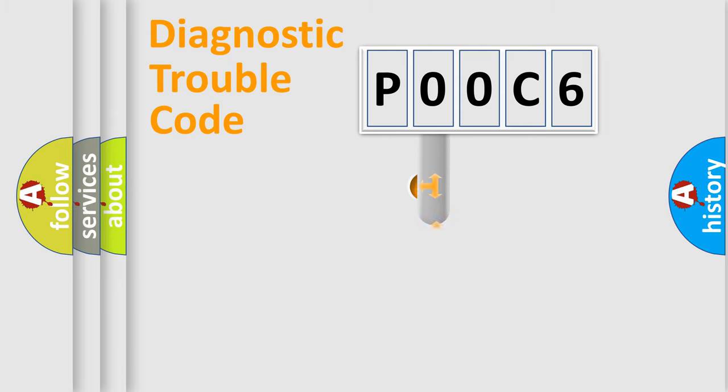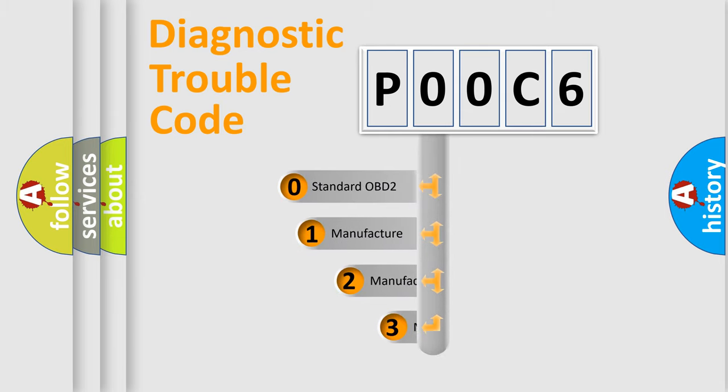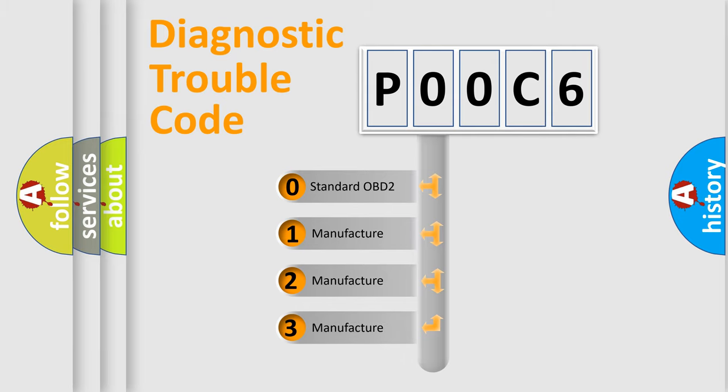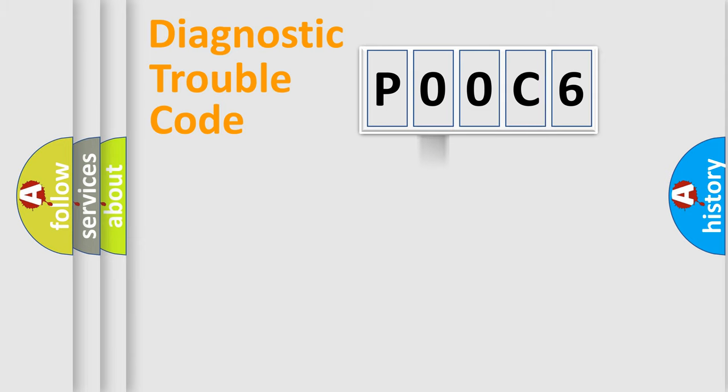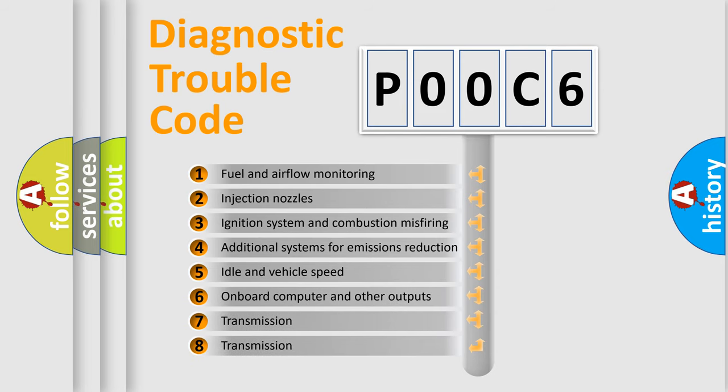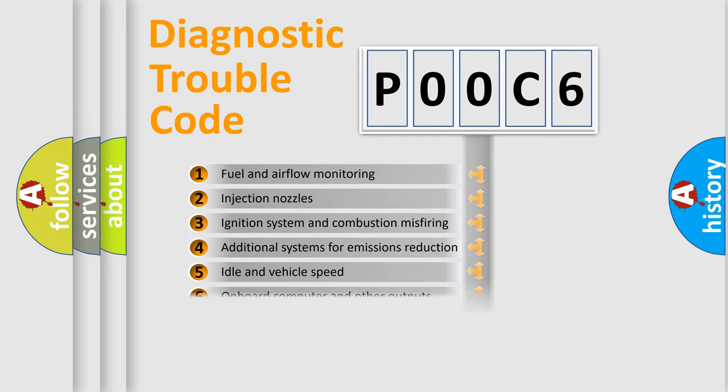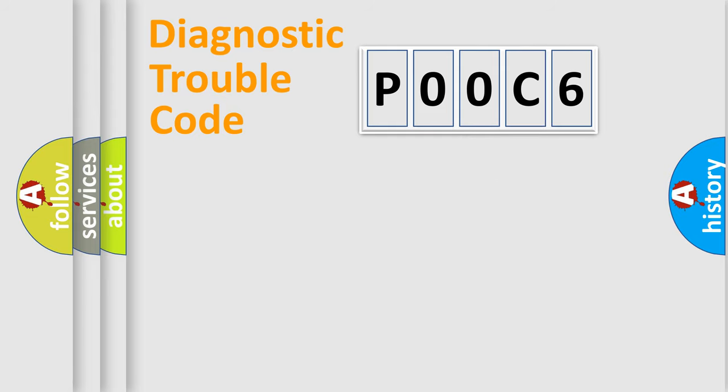This distribution is defined in the first character code. If the second character is expressed as zero, it is a standardized error. In the case of numbers 1, 2, 3, it is a manufacturer-specific error. The third character specifies a subset of errors. The distribution shown is valid only for the standardized DTC code.